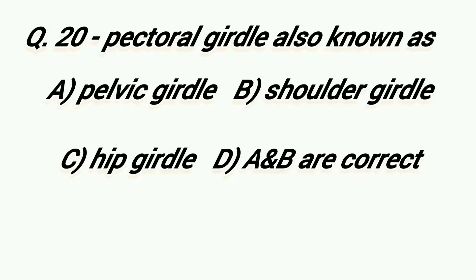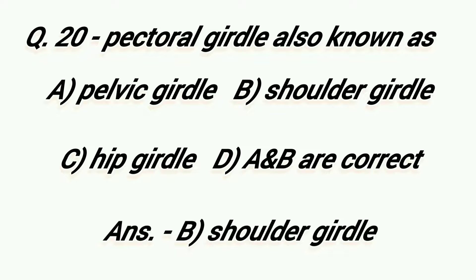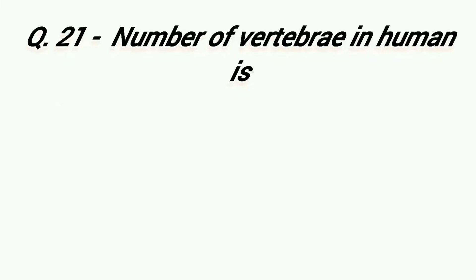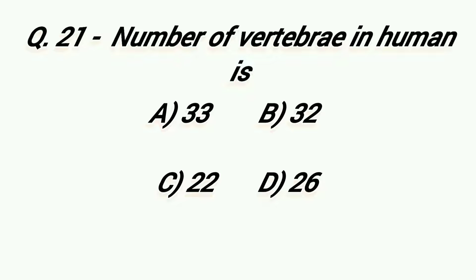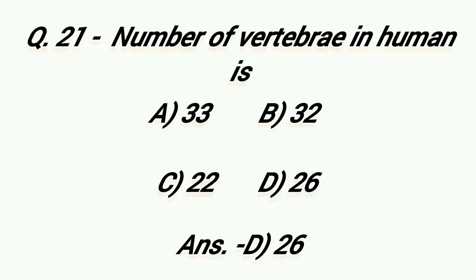Pectoral Girdle is also known as: Option A: Pelvic Girdle, Option B: Shoulder Girdle, Option C: Hip Girdle, Option D: A and B are correct. Right answer is Option B, Shoulder Girdle. Number of vertebrae in the human body is: Option A: 33, Option B: 32, Option C: 22, Option D: 26. Right answer is Option D, 26.